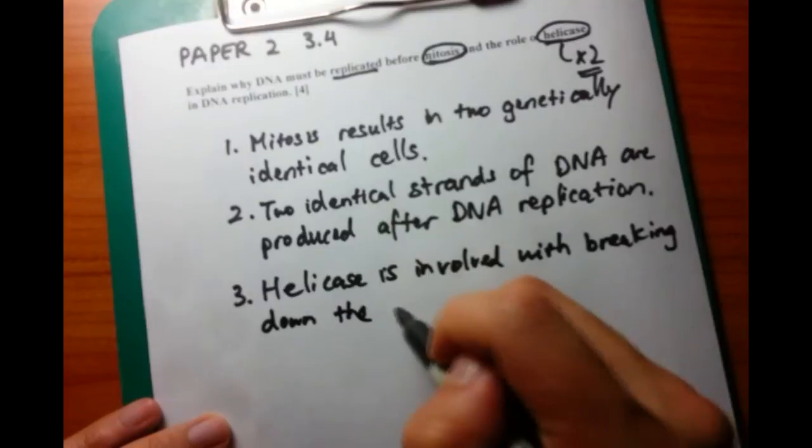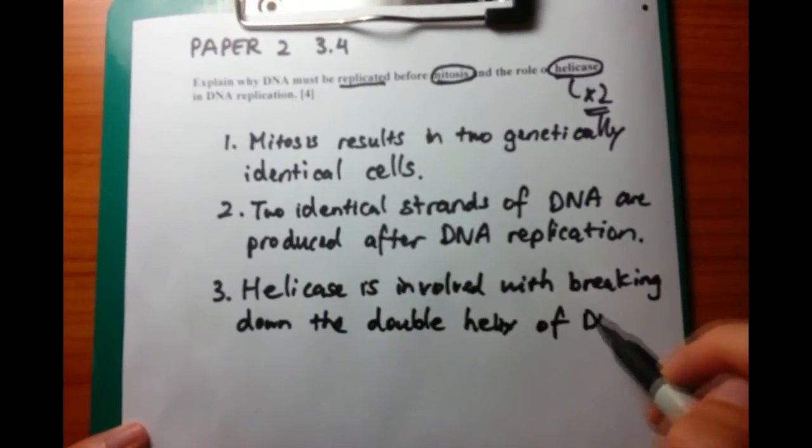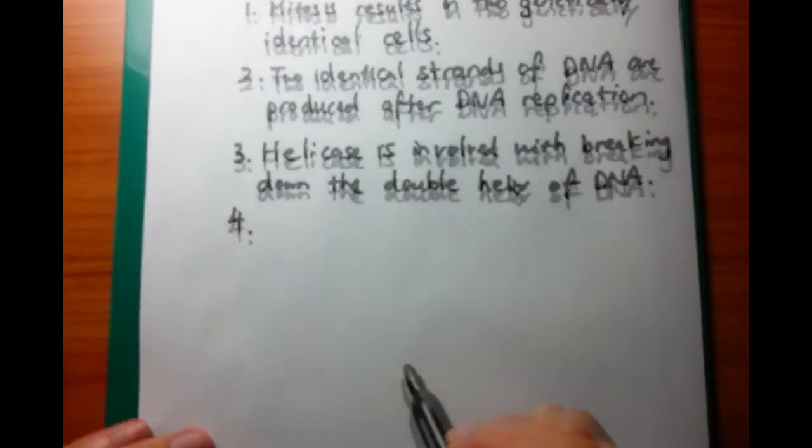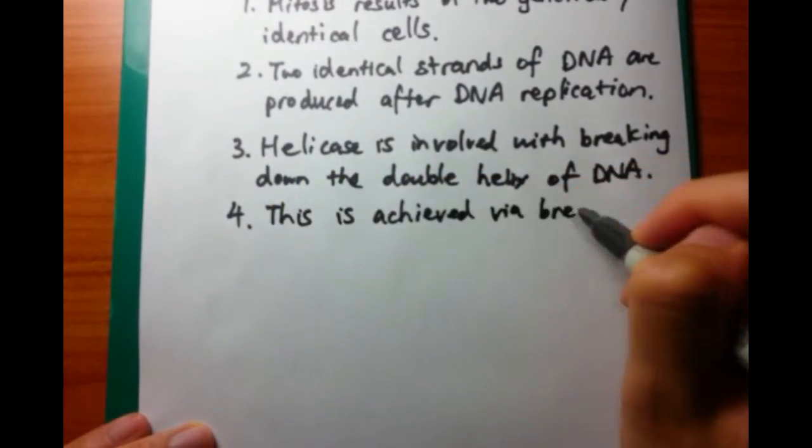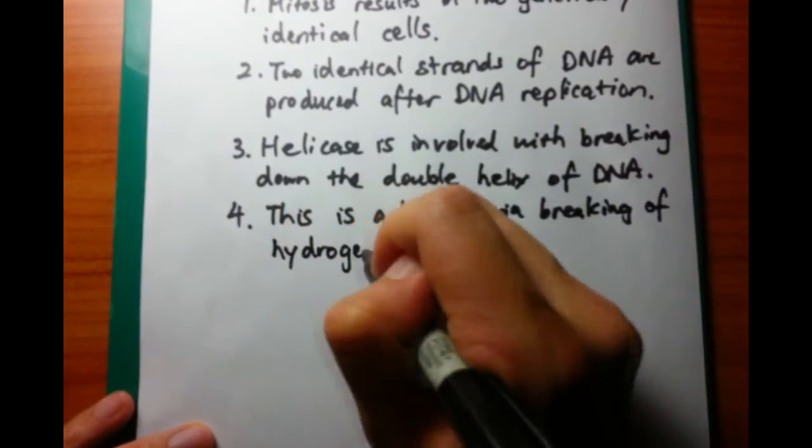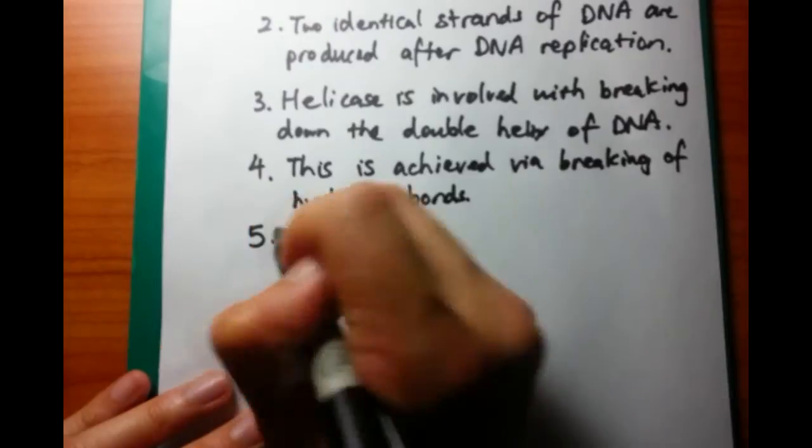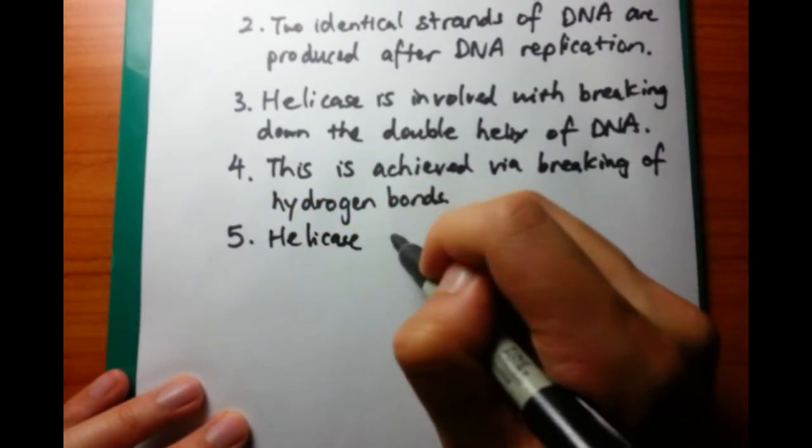The first is that helicase is involved with breaking down the double helix structure of DNA. And this is achieved via breaking of the hydrogen bonds. So the hydrogen bonds that exist between the nitrogenous bases, those are broken apart and therefore the double helix structure is broken down.